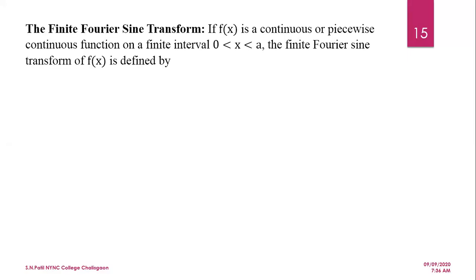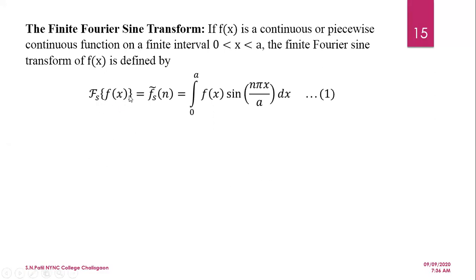Hello friends. In this video lecture we will discuss finite Fourier sine transform and finite Fourier cosine transform. The function f(x) is a continuous function on the finite interval 0 to a. The finite Fourier sine transform of f(x) is denoted by f̃_s(n) and defined as the integral from 0 to a of f(x) sin(nπx/a) dx.